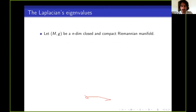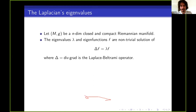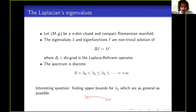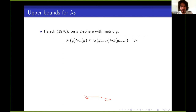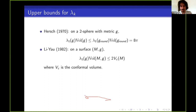First, the Laplacian's eigenvalue. We're in a spectral geometry seminar, so I'll just fix the notation. We look at (M, g), a compact and closed Riemannian manifold; n will always be the dimension of the manifold. I'll denote the eigenvalues by lambda for the Laplacian. The eigenvalues are discrete and increasing to infinity. One important question in spectral geometry is finding upper bounds for lambda k that are as general as possible while still being good. For example, there's a Hersch result in the 70s on a sphere with some metric g, bounding the first eigenvalue times the volume by 8π. Then Li and Yau give an upper bound on any surface involving the conformal volume.